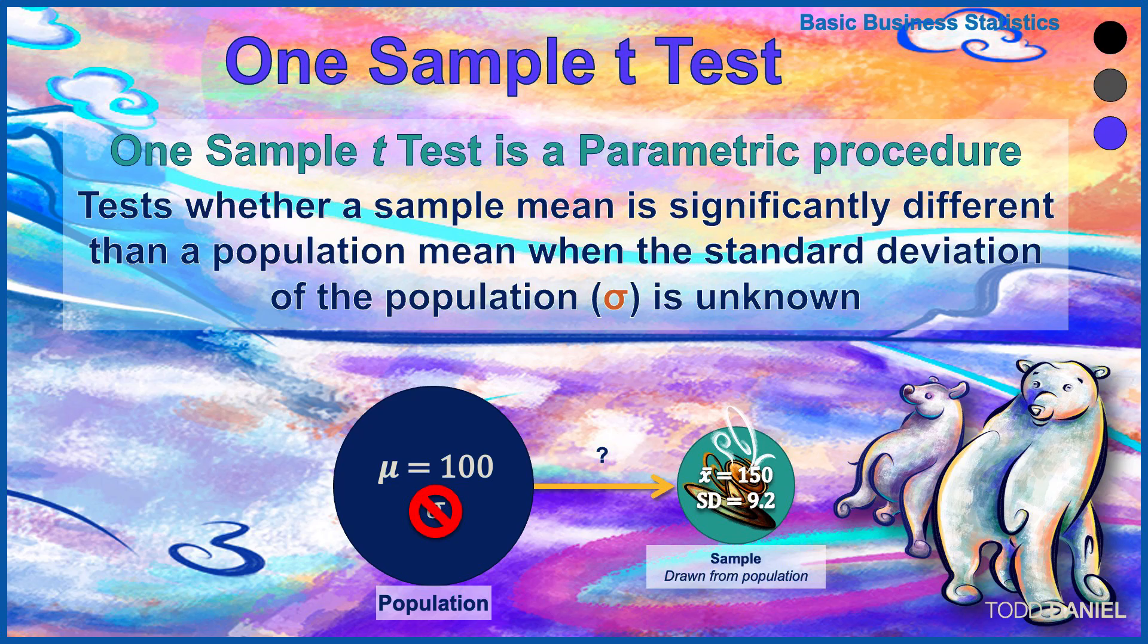A one sample t-test is a parametric procedure. It tests whether a sample mean is statistically significantly different than a population mean when the standard deviation of the population is unknown.